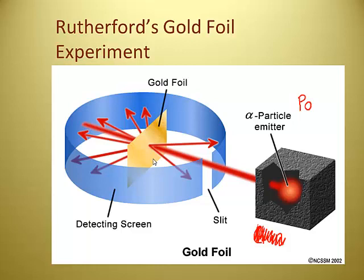They put a detecting screen around the end — any alpha particles that hit this detecting screen light up because of a special chemical on it. What they were expecting was all of the light to be on the far side, because they thought atoms were plum pudding — the Thompson model — so something positive flying through them would just fly right through, no problem. But it turned out they saw these deflections. Let's go to a video showing how these deflections work.